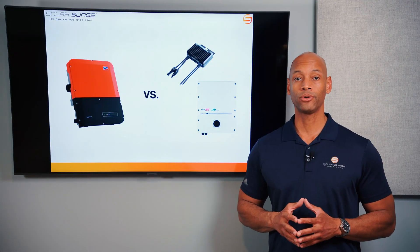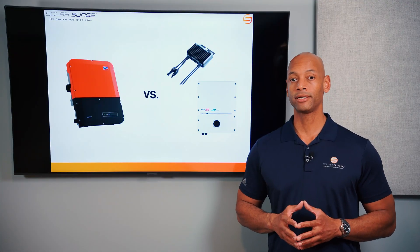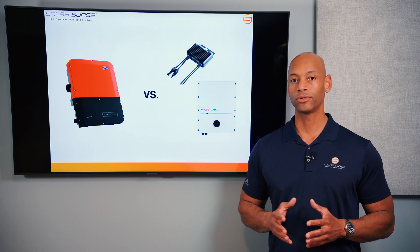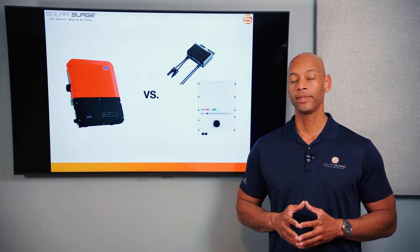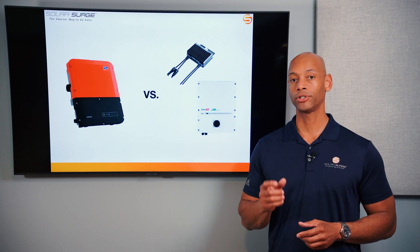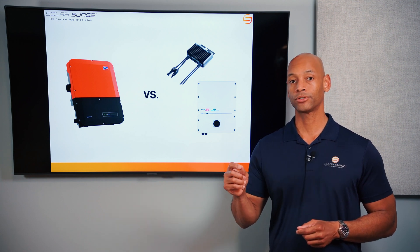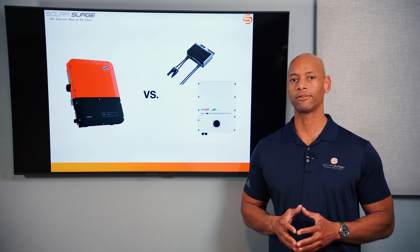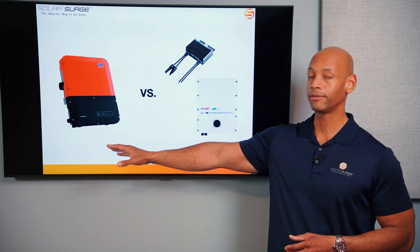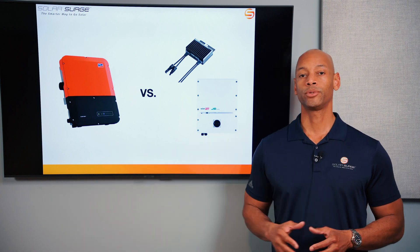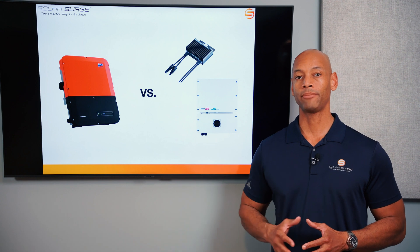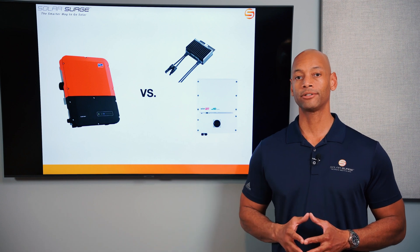The nice thing about the string inverter was that the wiring was very simple. We would generally only have to run two or maybe three circuits from the roof, and we could use smaller wire size because the voltage coming off those solar strings was high — typically 300 to 500 volts. That could be landed right at the string inverter, which would then provide an AC output that could be fed into the house or back to the electric meter.